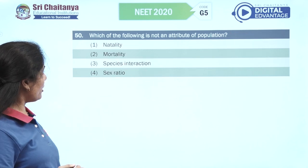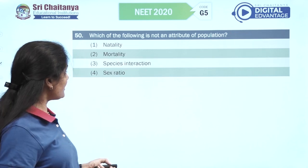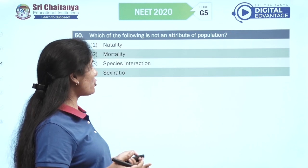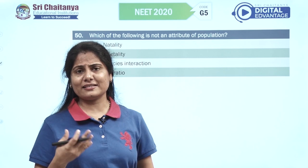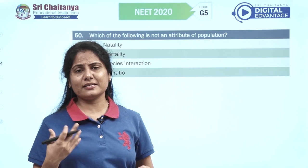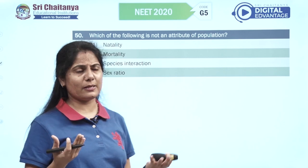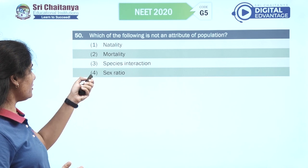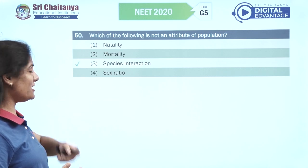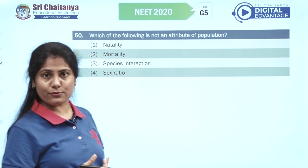Which of the following is not an attribute of population? Recall: natality, mortality, immigration, emigration are population attributes. So obviously, species interaction is not a population attribute — that's the answer.